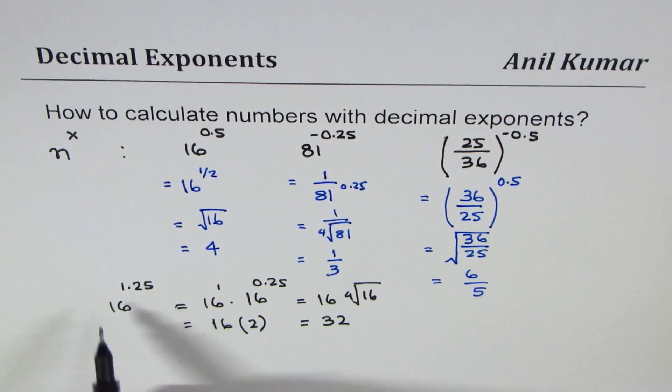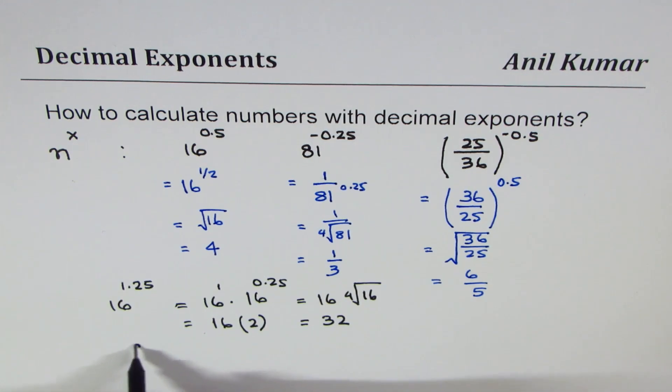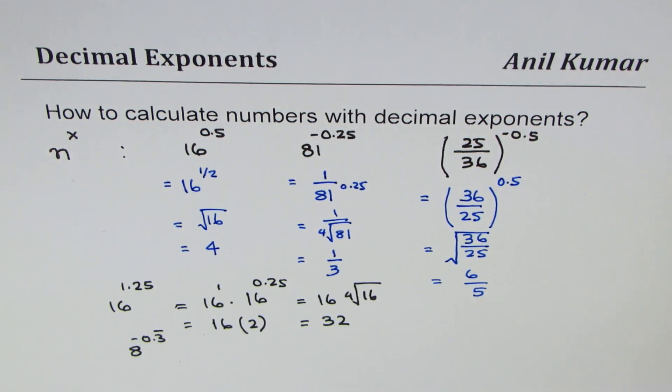So that is how we can find something like what we did just now. So you can try, let's try this: 8 to the power of minus 0.3 recurring. This is also kind of different. 0.3 recurring can be written as 1 over 3.